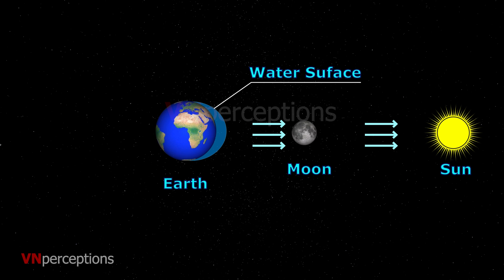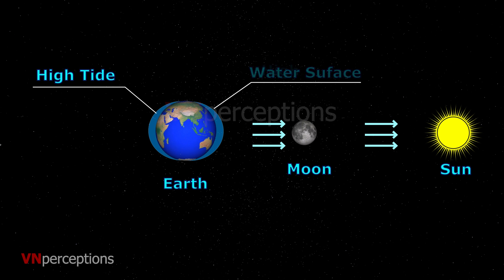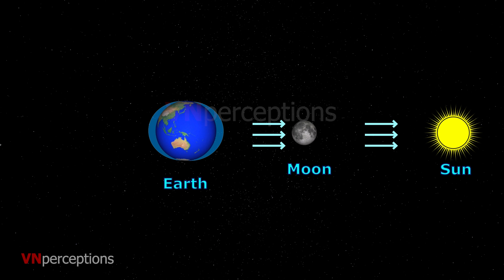This attraction pulls water towards the moon and creates a bulge on the surface of the earth. Similarly, we also see a high tide or a bulge on the opposite side of the earth and this happens simultaneously. The explanation of the two bulge tide comes from the fact that the moon and the earth form a two-body system that rotates about an axis located within the earth. The bulge on the other side of the earth is due to inertia.